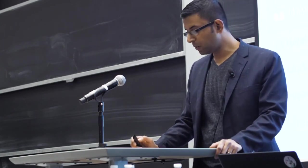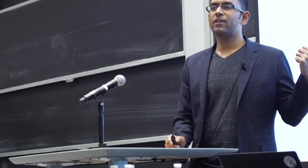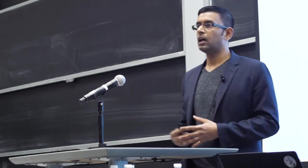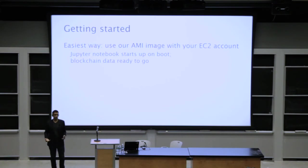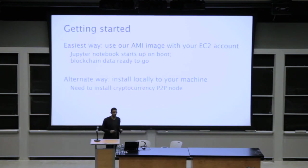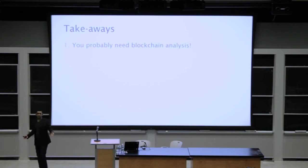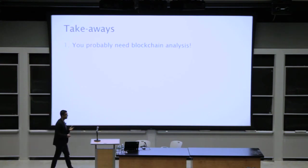If you want to get started using BlockSci, the easiest way is through an Amazon instance we've released — you can simply point and click on your own EC2 account. You'll get booted to your own EC2 instance using our image, which will give you a Jupyter notebook with all of the blockchain data built in so you can get started very quickly with very little startup cost. There is also an alternative of installing it yourself and doing the analysis on your local machine. I hope I've convinced you that you probably need blockchain analysis — for research, competitive intelligence, or monitoring your own company's blockchain data.